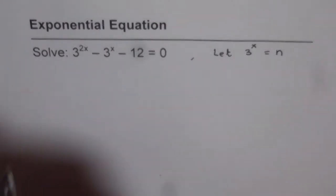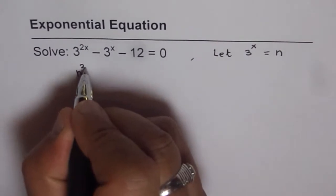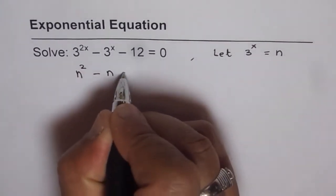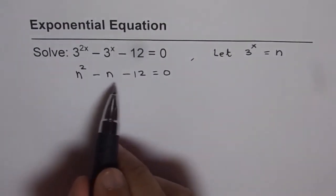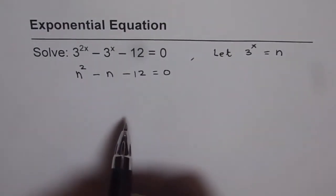In that case we can write our equation as n squared minus n minus 12 equals 0. Now that becomes a quadratic equation which can be factored.